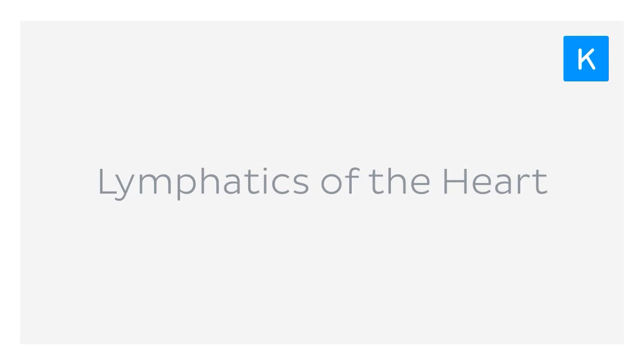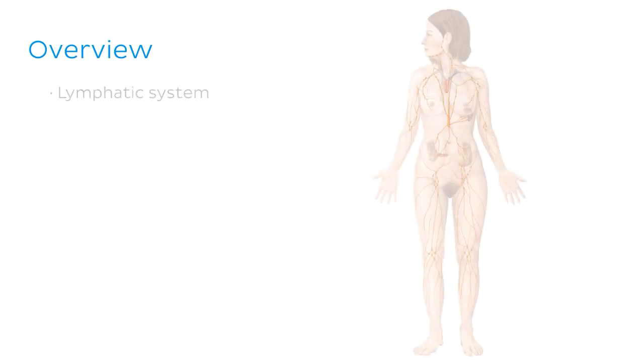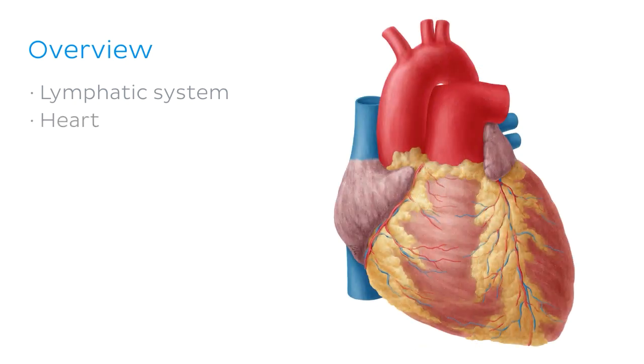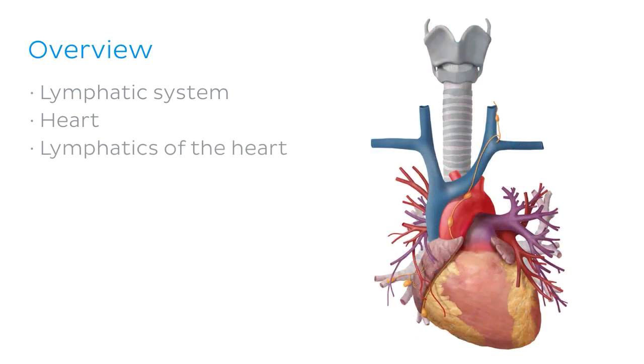In this video we'll be exploring the pathways in which lymph travels from the heart to the venous system. Before we begin, let me give you a quick overview of what we're going to talk about today. First we'll look at these two components separately — the lymphatic system and the heart. Then we'll put them together and discover where and how these two components interact by looking at the lymphatics of the heart, which is of course the topic of this tutorial.